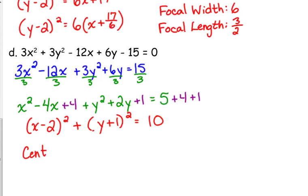So we get x minus 2 squared plus y plus 1 squared is equal to 10. So the center of our circle is 2, negative 1. Our radius is the square root of 10. And that's about all we talk about for circles, their center and their radius.